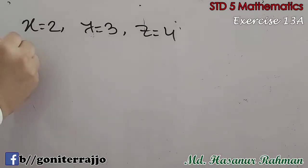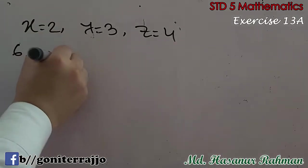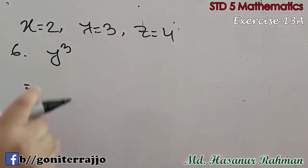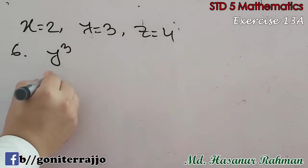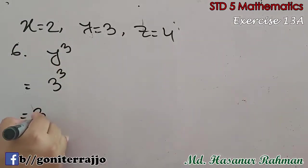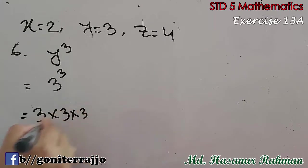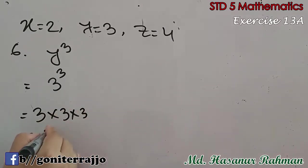Now number 6: y cube. y cube means 3 cube, and 3 cube means 3 into 3 into 3, that is 27.